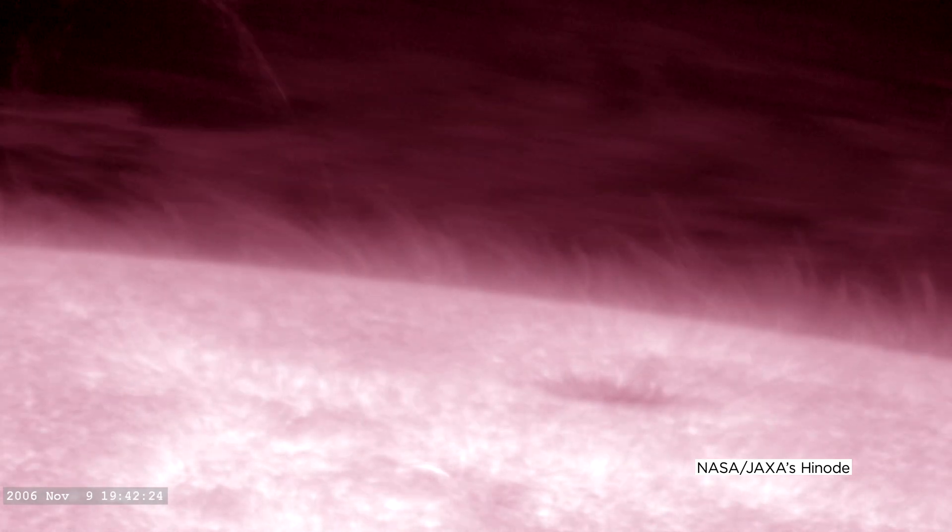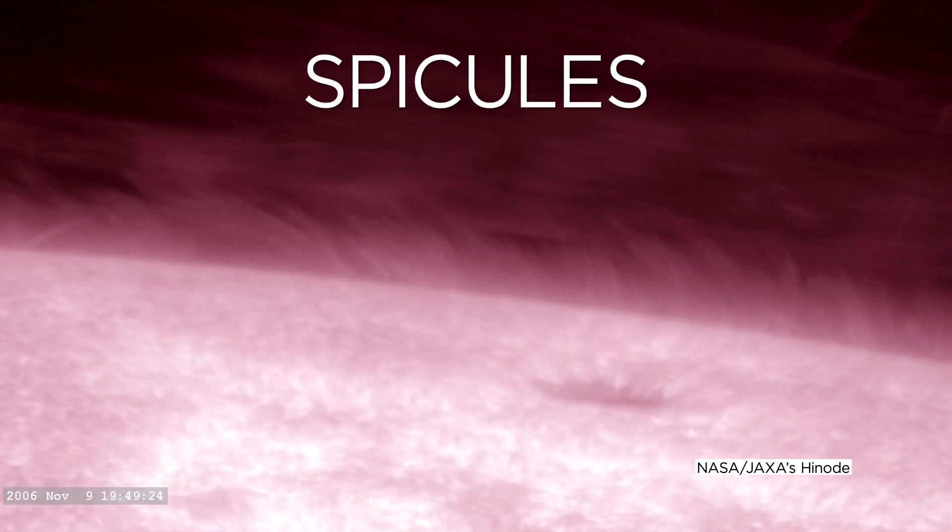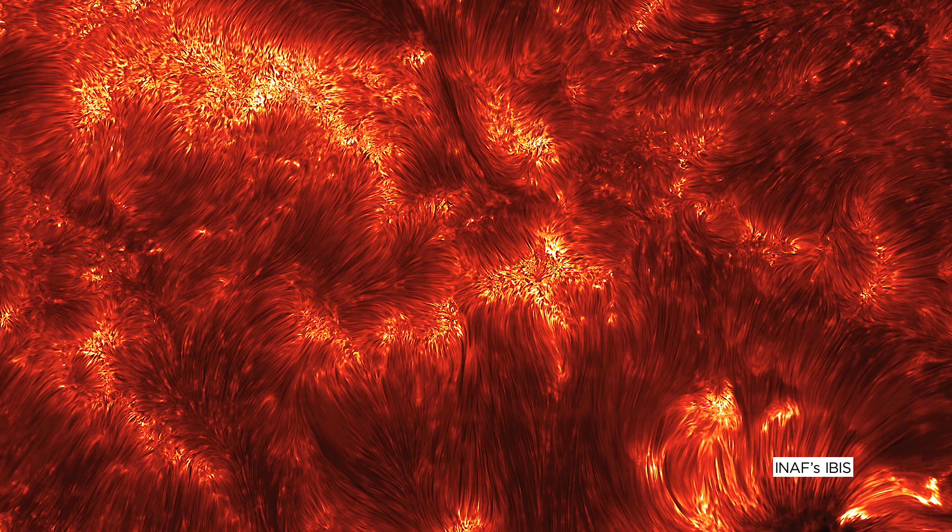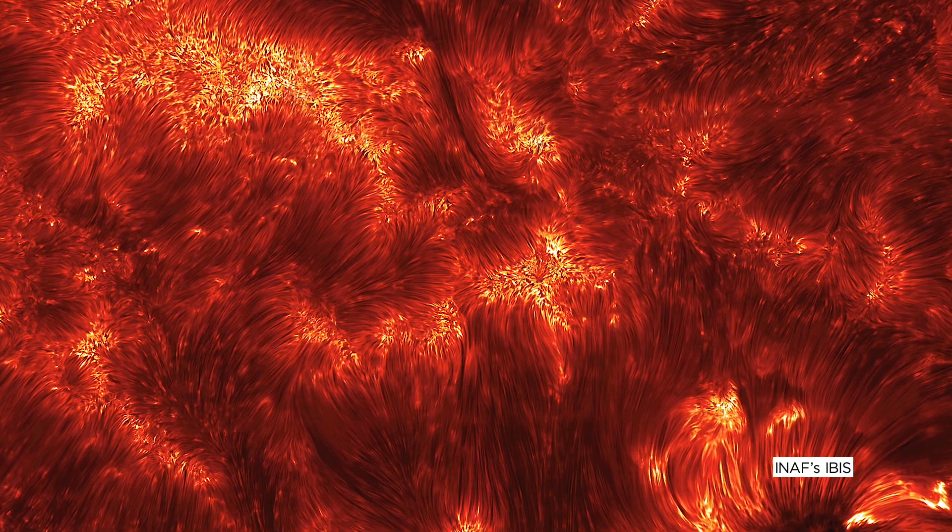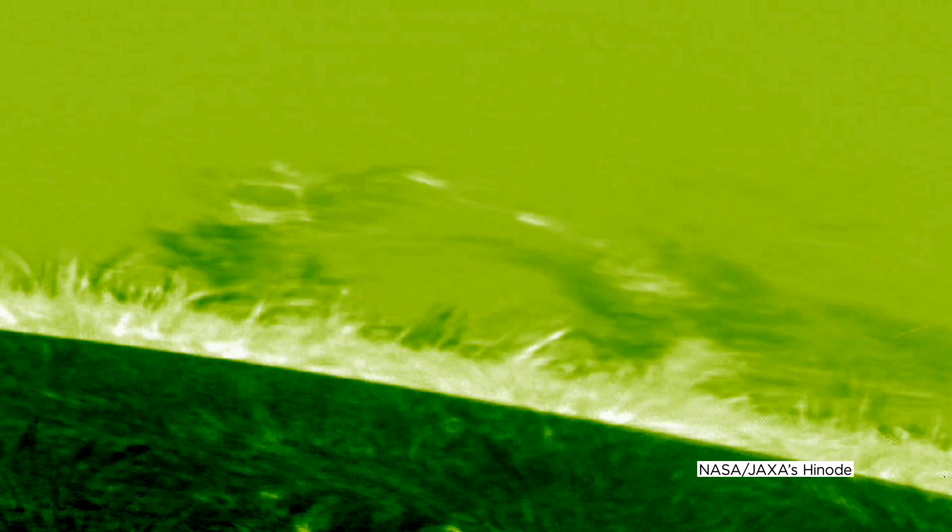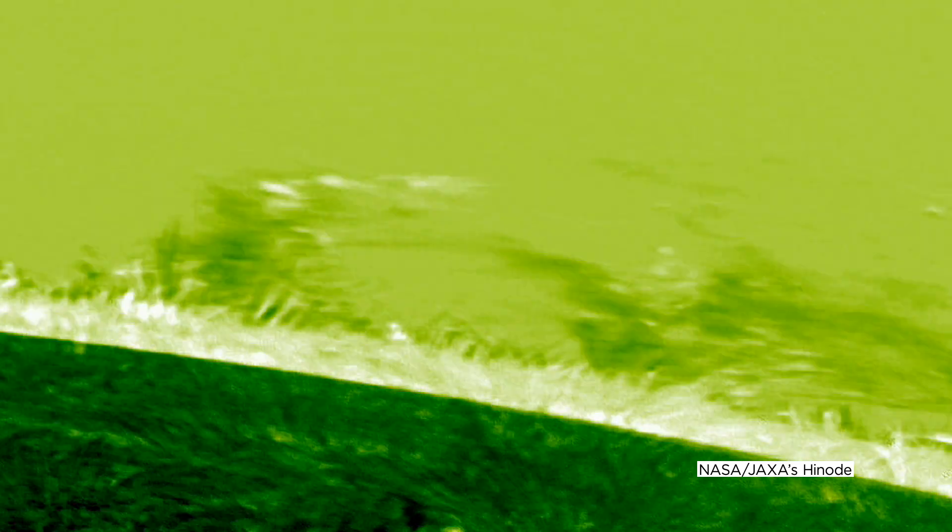A new NASA-funded study has revealed the origins of spicules, lengthy jets of plasma on the sun's surface. Scientists have been observing these long strands of solar material since the end of the 19th century, but their origins have been difficult to study because they're highly dynamic and short-lived.